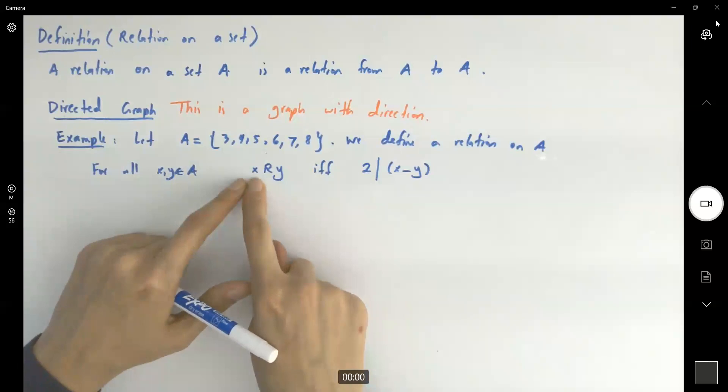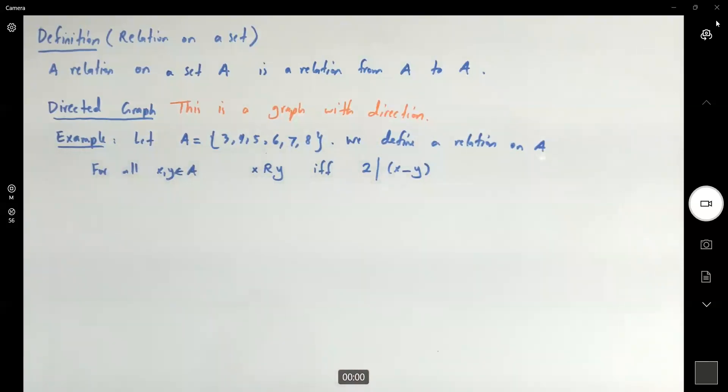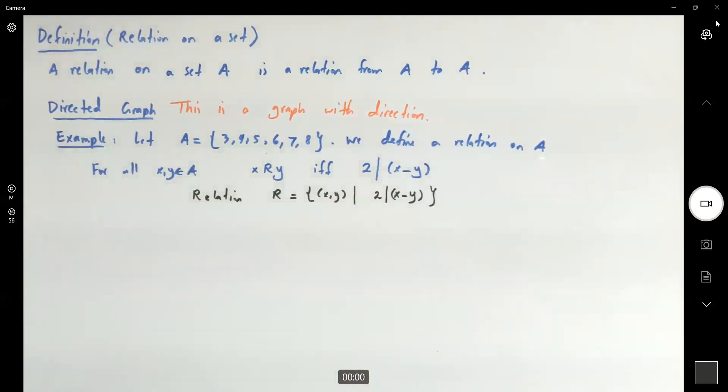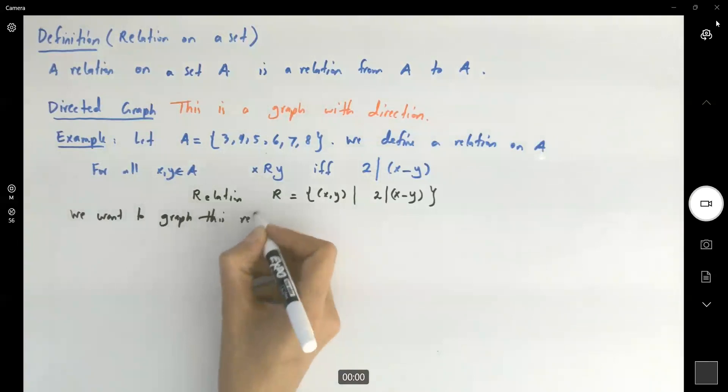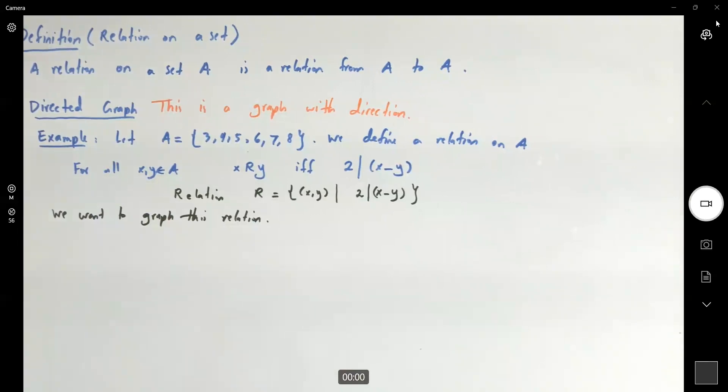Relation R includes all points such that 2 divides the difference, 2 is a factor of their difference. Now we want to graph this relation. First of all, let us find the values of the Cartesian product.